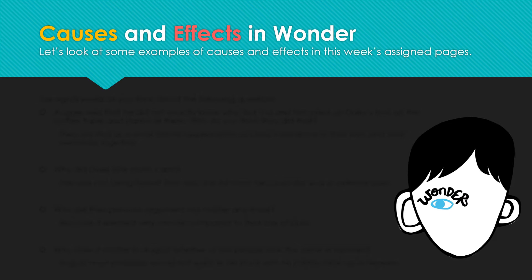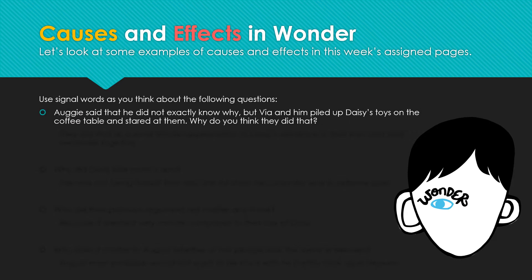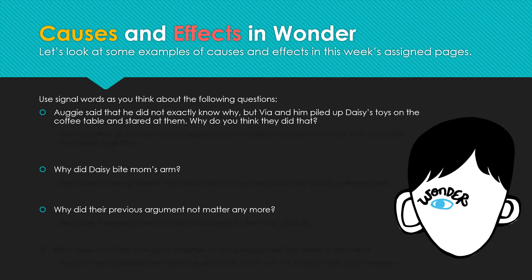Let's look at some examples of causes and effects in this week's assigned pages. Use signal words as you think about the following questions. Why did Augie and Via pile up Daisy's toys on a coffee table and stare at them? Why did Daisy bite Mom's arm? Why did their previous argument not matter anymore? And why does it matter to August whether or not people look the same in heaven? Think about all four questions and pause the video when you're done.